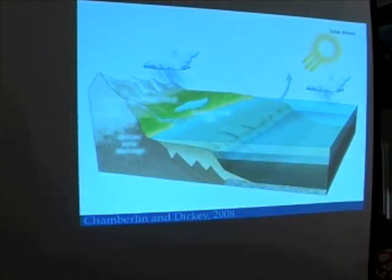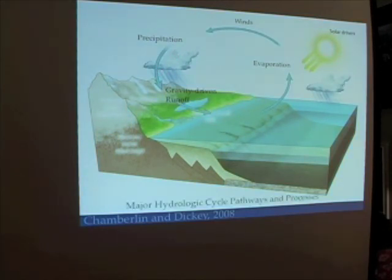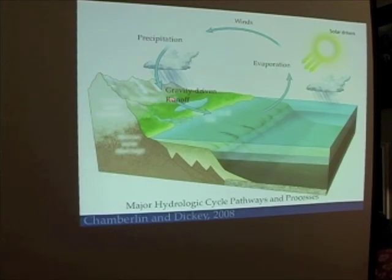Here we see an example where water is evaporated over the ocean. That water vapor is transported by winds. Those clouds condense and precipitate, causing water to flow downwards as a result of gravity. Through that gravity-driven runoff, the water returns to the ocean again. This is the cycle part of the hydrologic cycle — these are the pathways by which water moves from one reservoir, the ocean, to other reservoirs such as the sky and land.